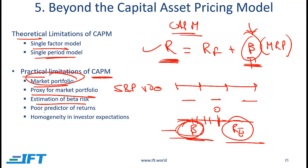The next point is that CAPM is a poor predictor of returns. If we compare the result of CAPM with the actual return historically, there will be a substantial difference. The final limitation is that CAPM assumes homogeneity in investor expectations — investors need to have the same expectations and arrive at the same optimal risky portfolio. But the reality is that investors can arrive at different optimal risky portfolios.